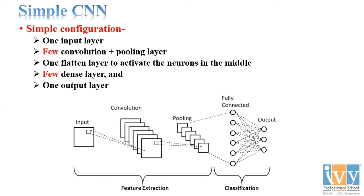The first model is a simple CNN model. We'll look at it first and then move to the second model and understand why a second model was needed. The simple CNN model has a very general configuration: one input layer, a few convolution plus pooling layers, then one flattening layer.